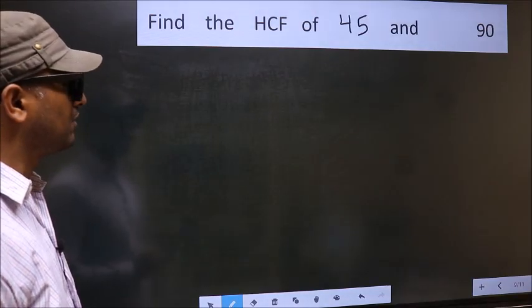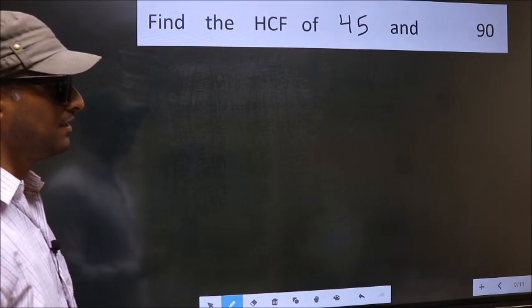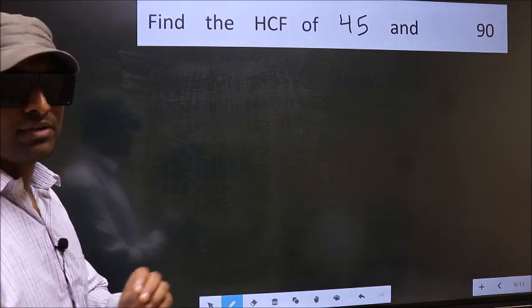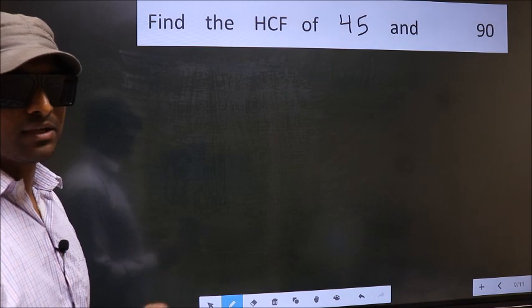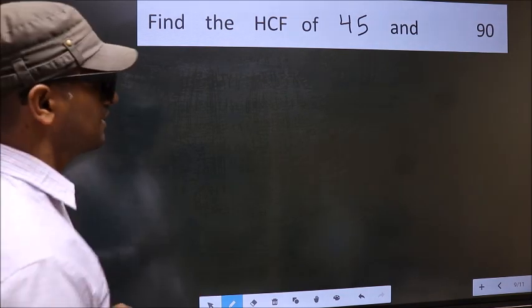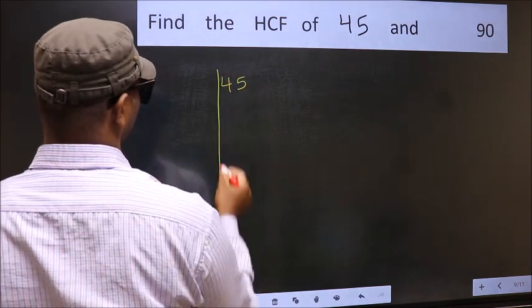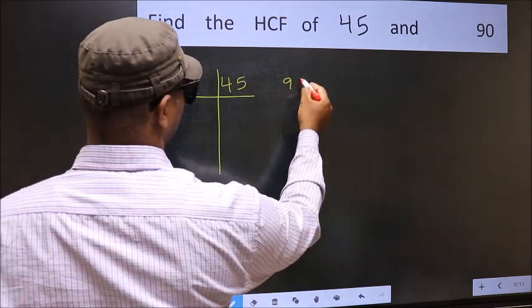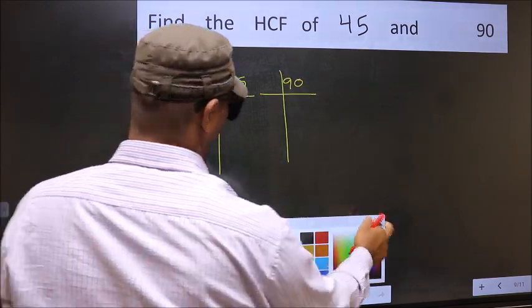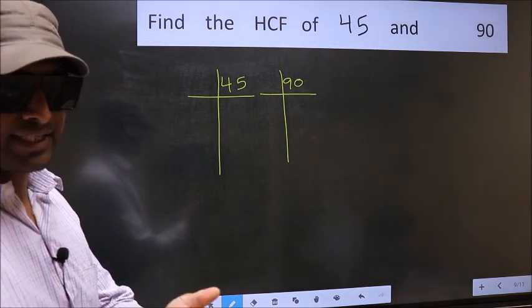Find the HCF of 45 and 90. To find the HCF, we should do the prime factorization of each number separately — that is, 45 and 90. This is step 1.